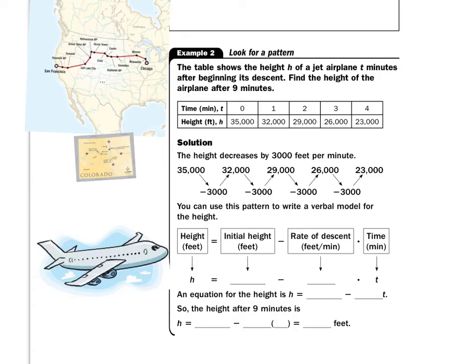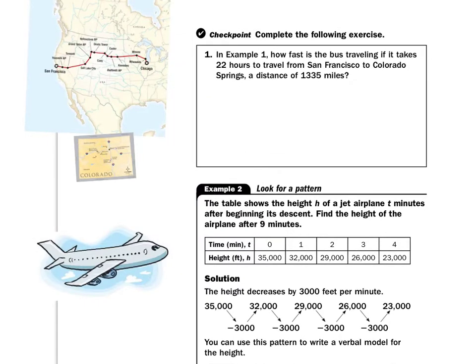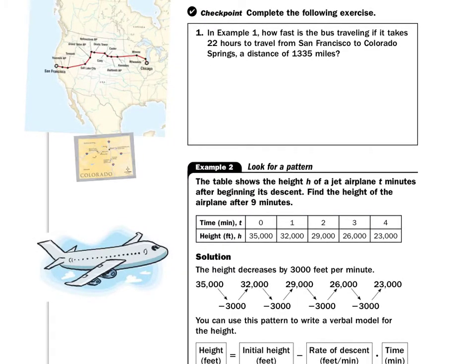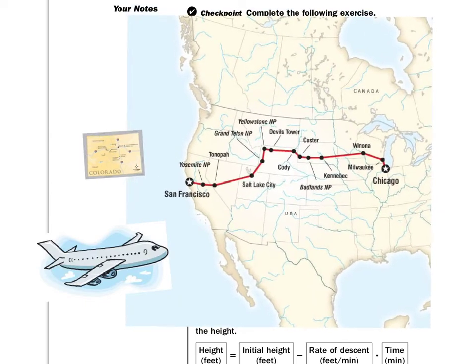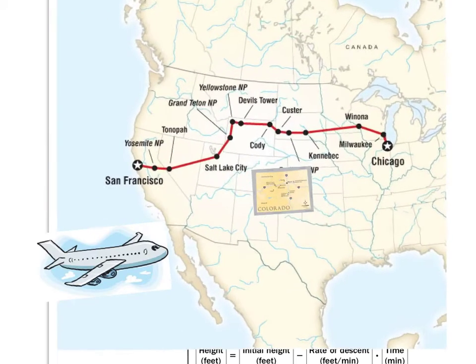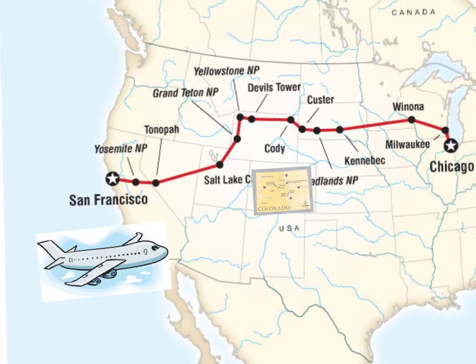Take a look at the second page here. They give us a checkpoint to do. It says, in example one, how fast is the bus traveling if it takes 22 hours to travel from San Francisco to Colorado Springs? Real quick, on our map again, where's Colorado and Colorado Springs?